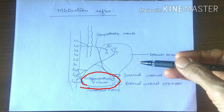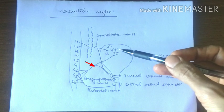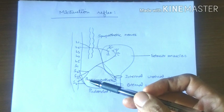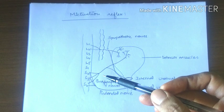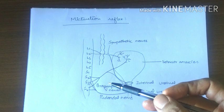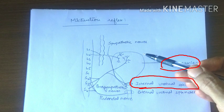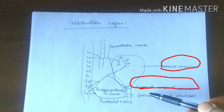Afferent impulses pass via pelvic parasympathetic nerves. These impulses go to the sacral segments S2, S3, S4. Efferent impulses also pass via pelvic parasympathetic nerves.